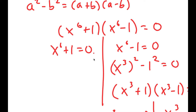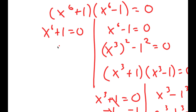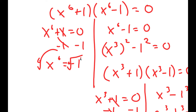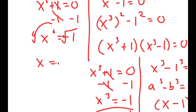Now for x to the power of 6 plus 1 equals 0, I subtract 1 on both sides to get x to the power of 6 equals negative 1. Taking the sixth root, I get x equals the sixth root of negative 1, which equals negative 1 to the power of 1 over 6.